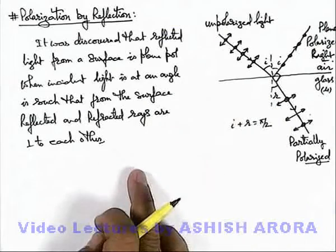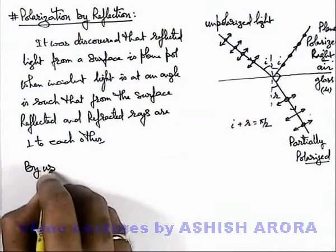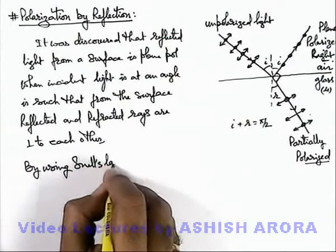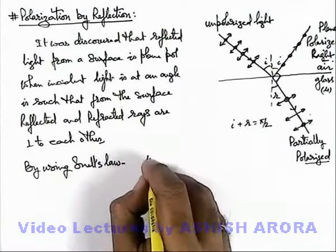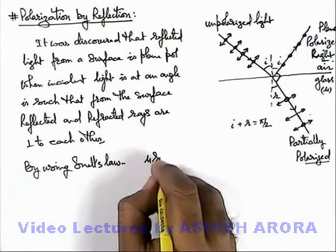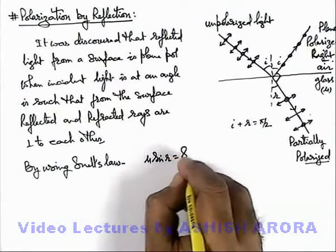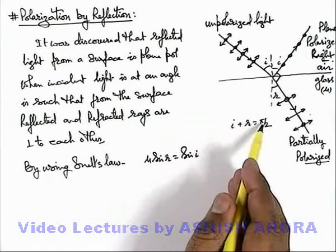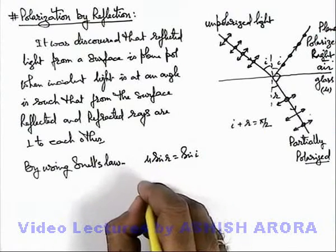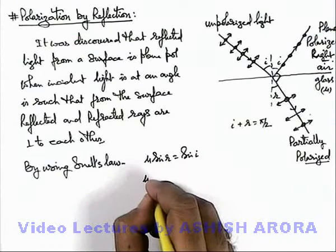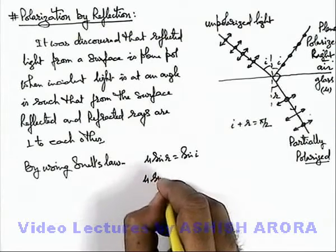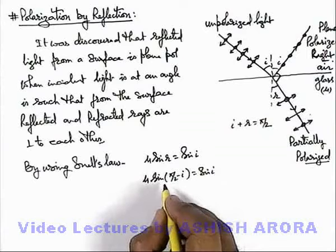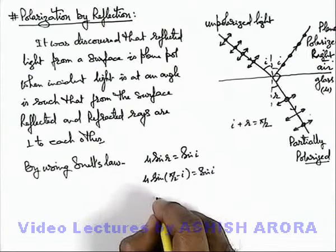This angle can be calculated using Snell's law. We write μ sine r equals sine i. In this situation, since i plus r equals π/2, we have r equals π/2 minus i. So μ sine of π/2 minus i equals sine i, which becomes μ cos i equals sine i.